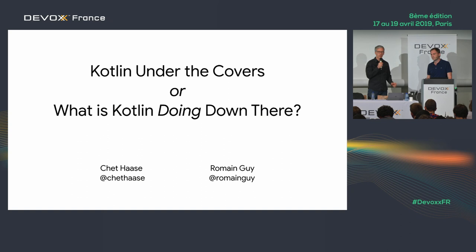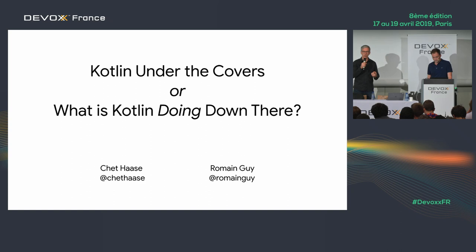We thought it'd be interesting to look at aspects of Kotlin that are not necessarily obvious. There are a lot of very cool things about Kotlin, but it's not always clear how they actually work underneath. So we wanted to accomplish two things with this talk: explain how these things work at the lower levels, and show you some ways to find out that information — how did we figure this stuff out?